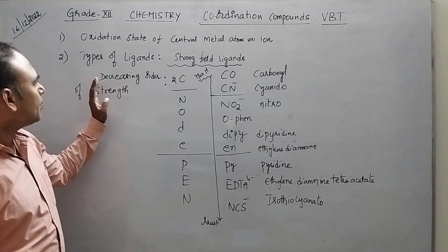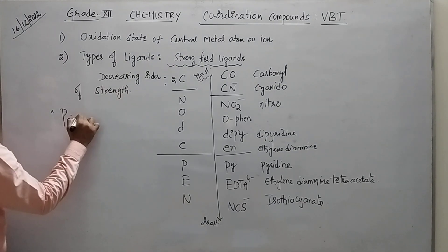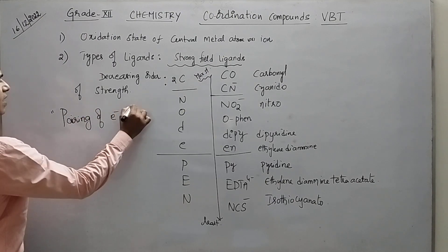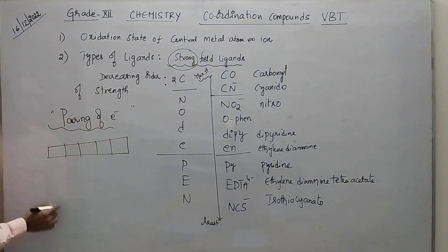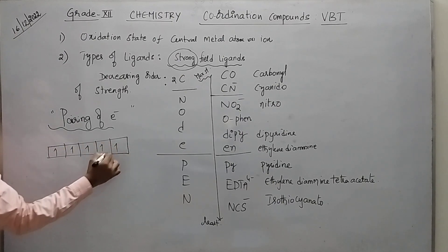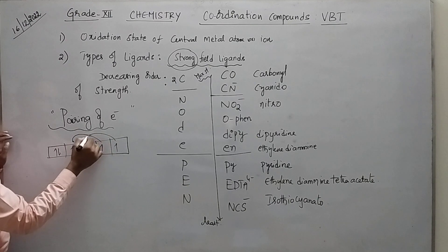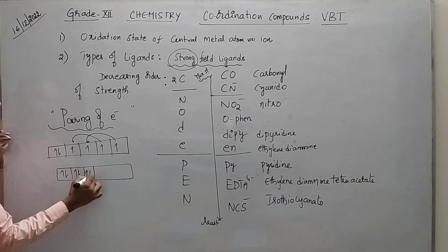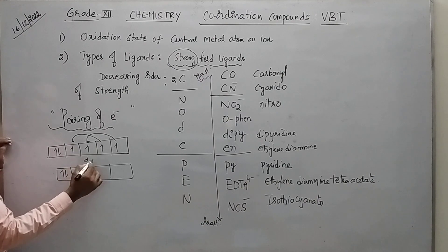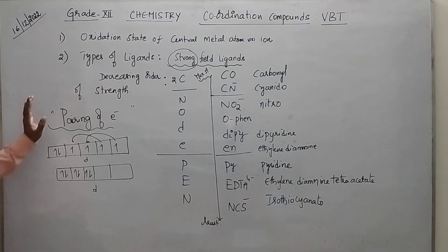Now, what happens to the central metal atom? In the presence of strong field ligands, pairing of electrons takes place. For example, if you have six electrons in the d orbitals, in the presence of a strong field ligand, pairing occurs, giving you three pairs of electrons. These paired d orbitals then participate in hybridization. Strong field ligands cause electron pairing — that is the key difference between strong and weak field ligands.